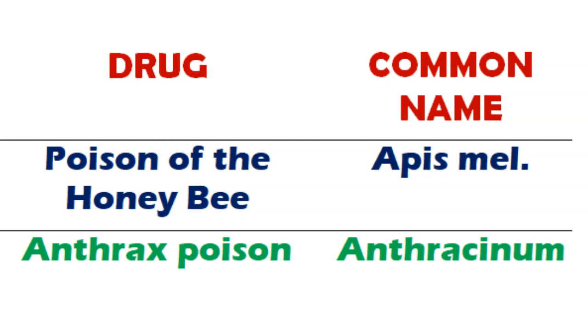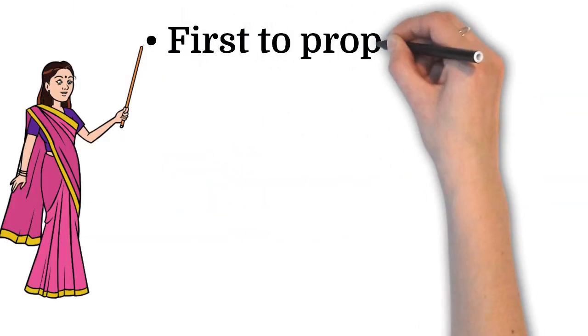Anthrax poison is the common name of Anthracinum. That's all for this video. Please provide your feedback in the comment section below, and we will love to answer your queries on this topic.